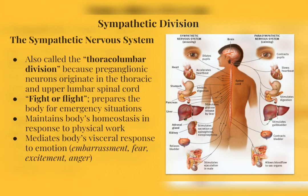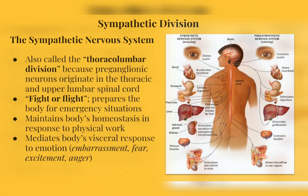The sympathetic nervous system is also called the thoracolumbar division, due to its nerves originating in the thoracic and upper lumbar regions of the spinal cord. It's also called fight or flight because it gets the body prepared for emergency situations — for instance, will you fight an attacker or run away? The sympathetic division also functions to keep the body balanced during times of intense physical work, like exercising.